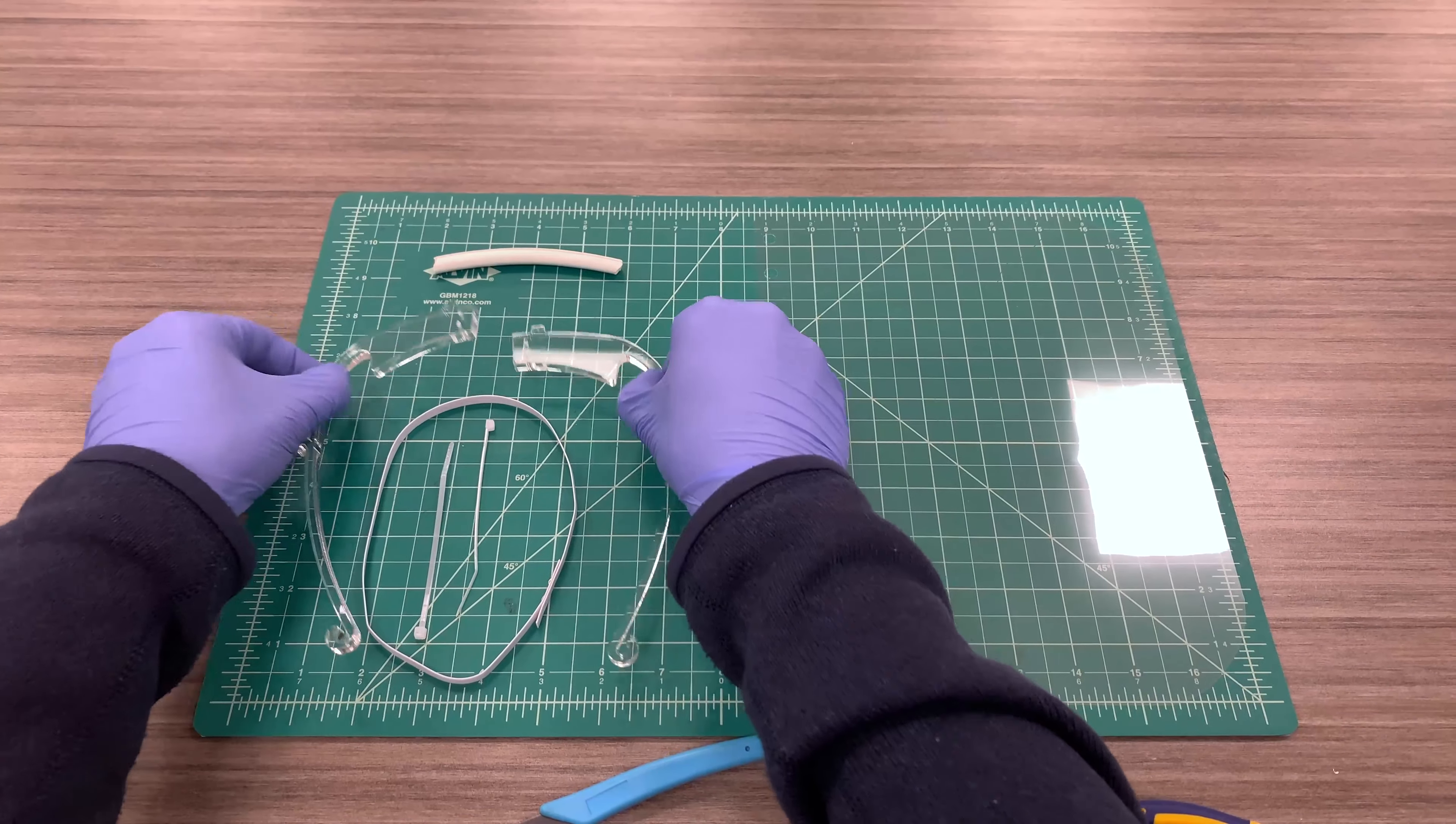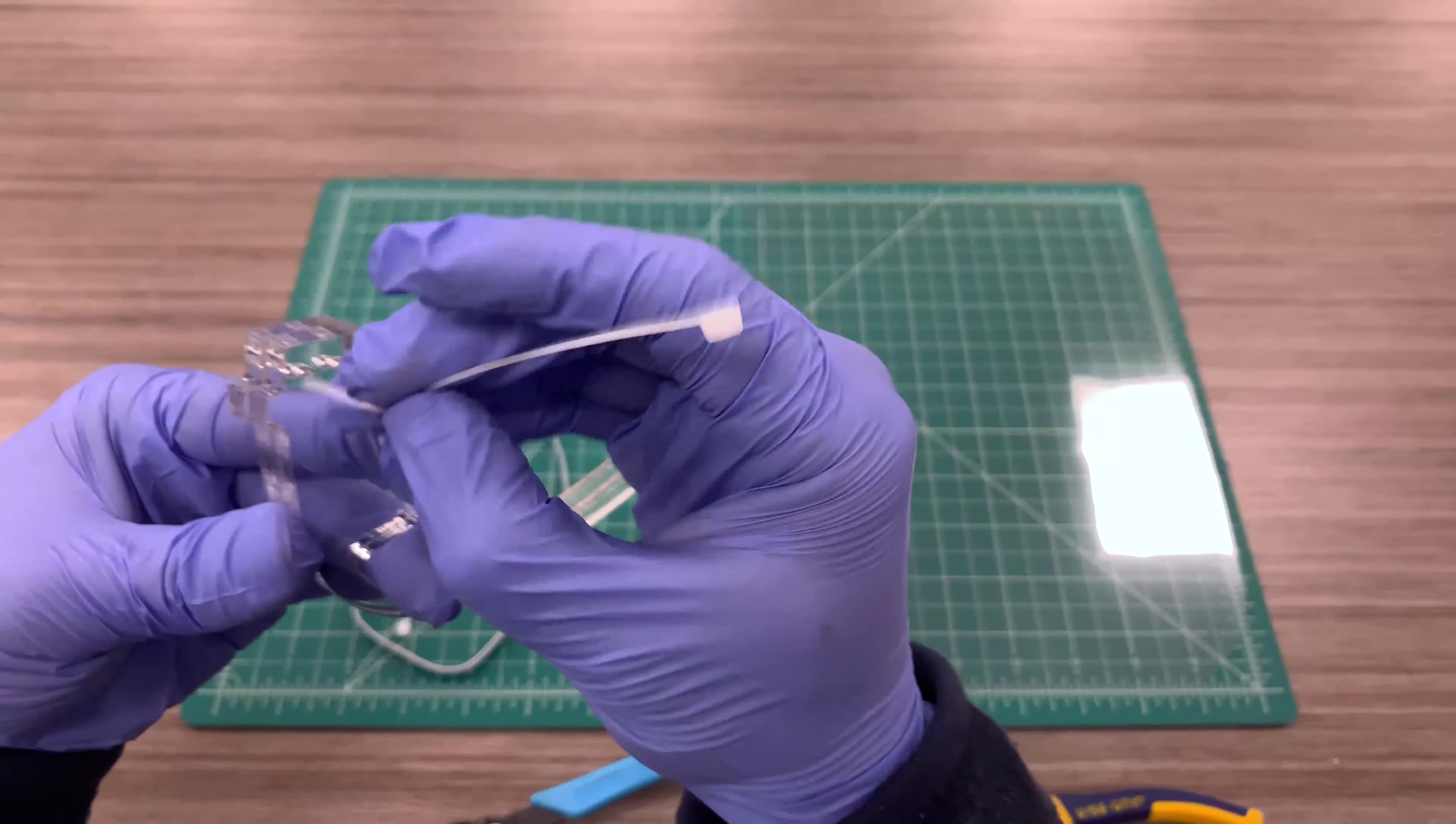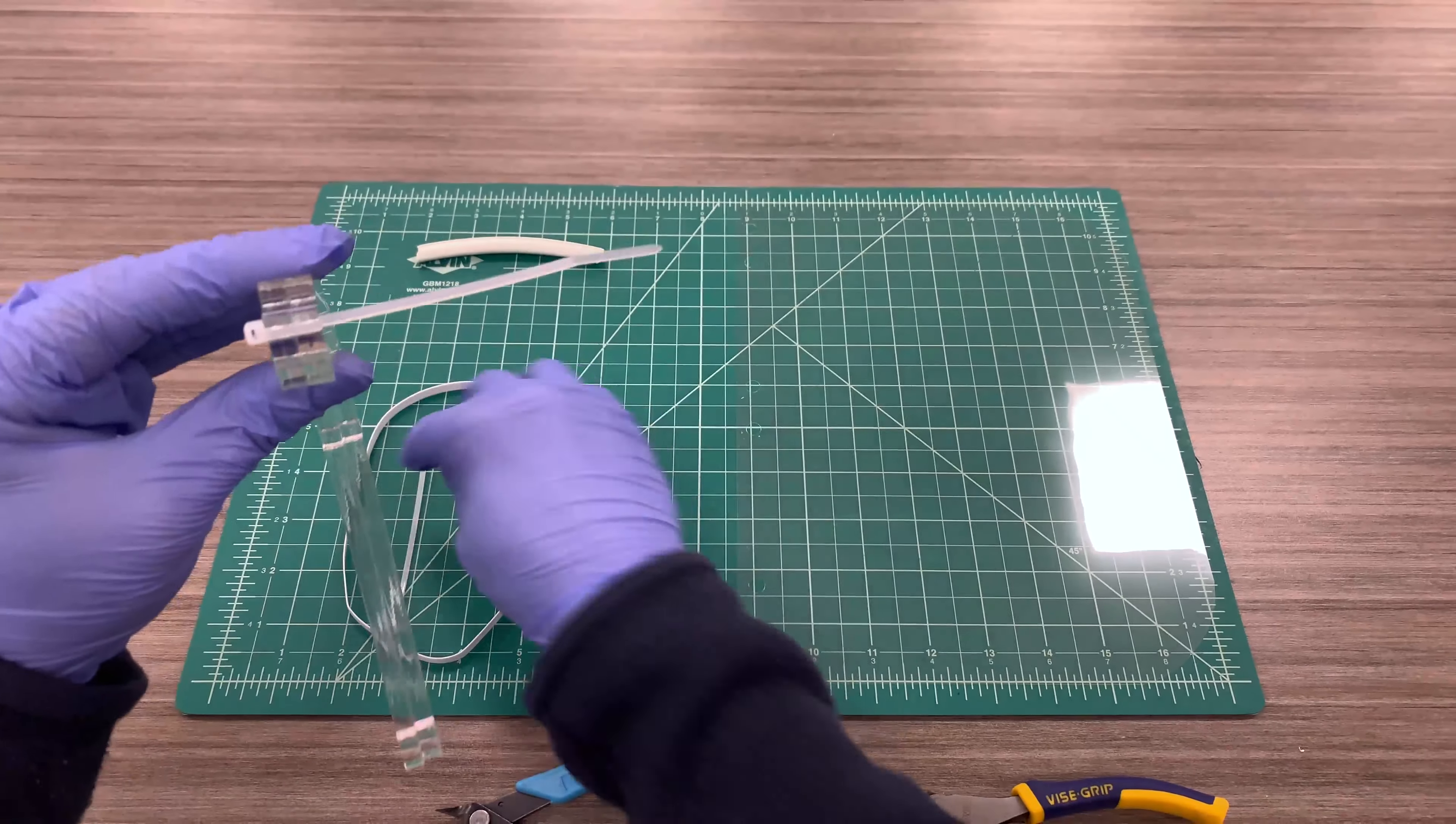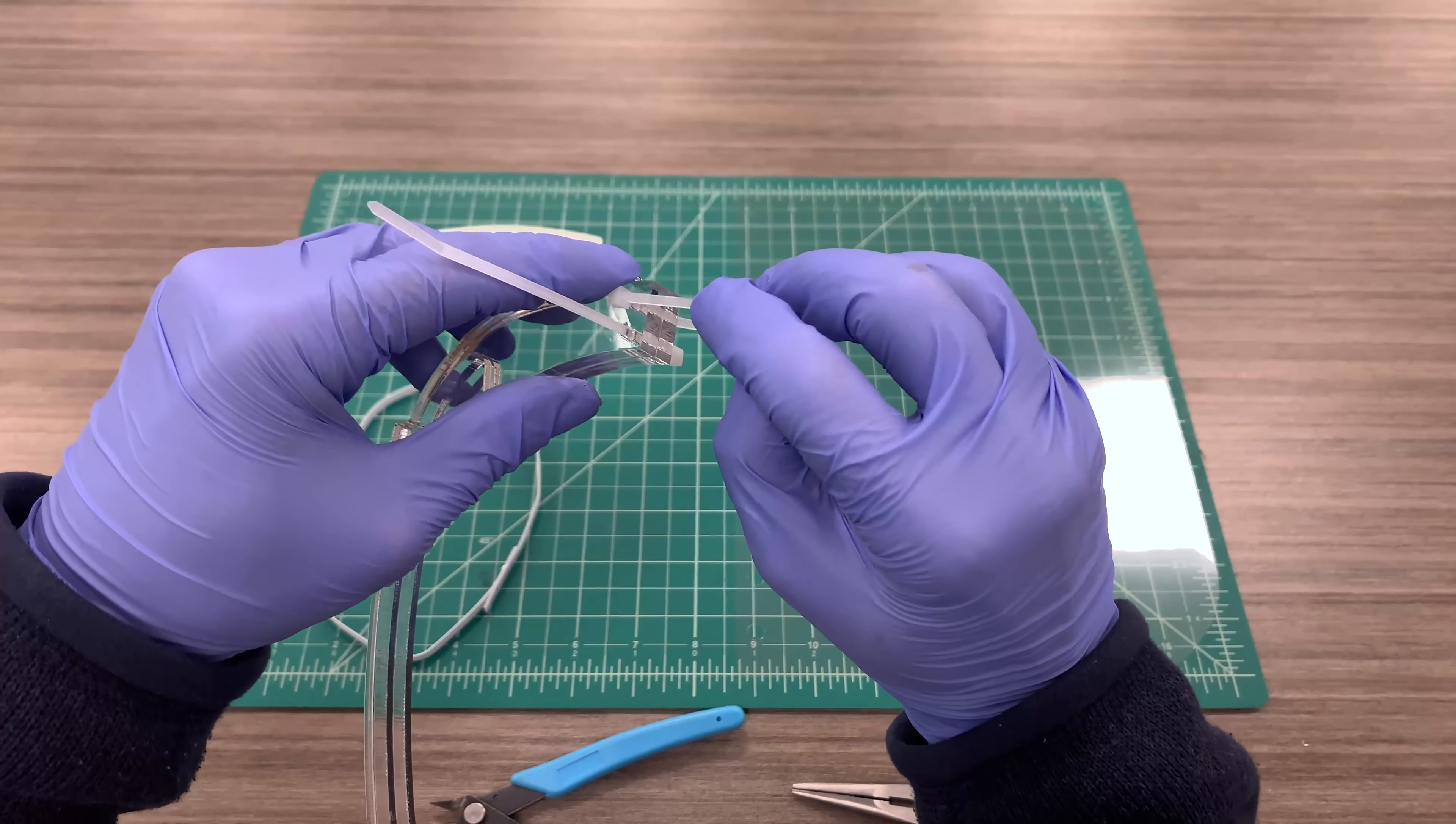All right, so we're gonna assemble the visor first. It's two symmetrical pieces. You want to overlap. You take one zip tie, feed it through the top. The other zip tie, you want to feed it the opposite way through the other hole, and you want to close them slightly.